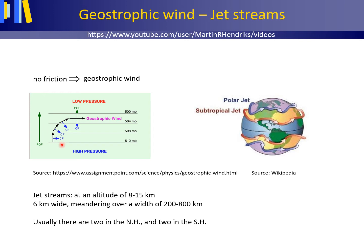As soon as the air starts to move, the Coriolis effect comes into action, which on the northern hemisphere causes a deflection of the air movement to the right. Equilibrium of the forces at the Earth's surface means that the pressure gradient force needs to be balanced not only by the Coriolis effect — as in the upper troposphere — but now also by the friction force. In other words, the pressure gradient force must be balanced by the resultant of the Coriolis effect and friction force.